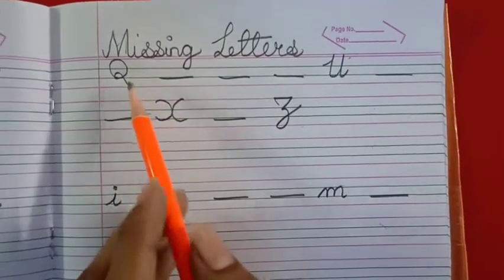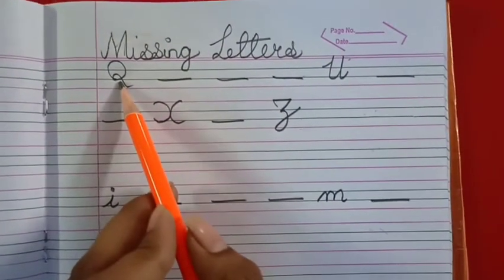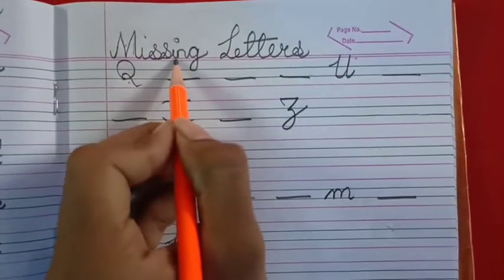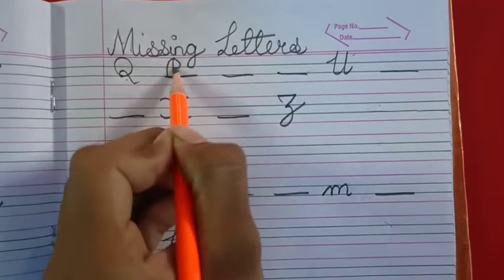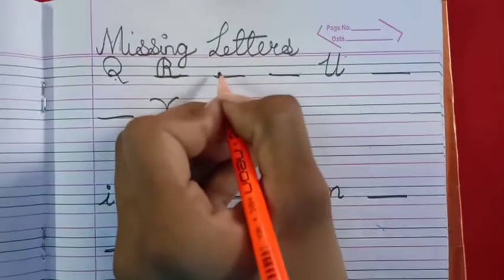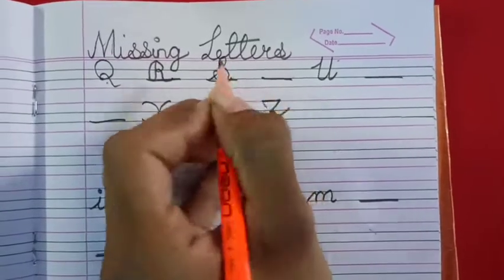The letter is given first capital cursive letter Q. After Q, R. Capital R. Then S, T.